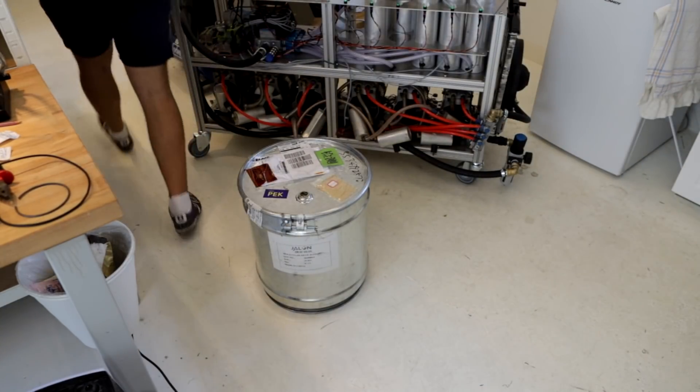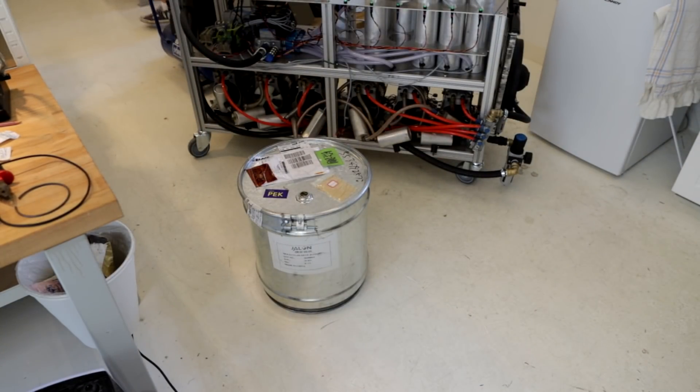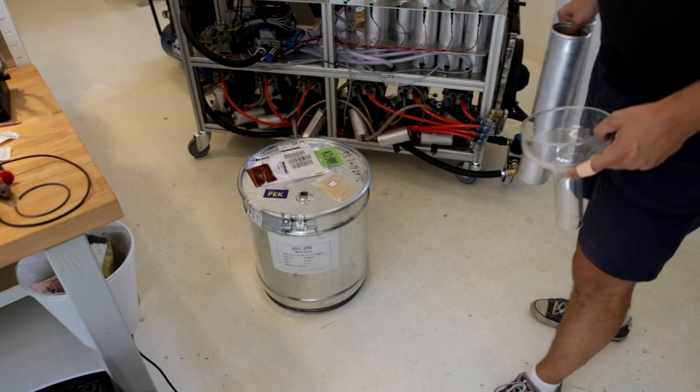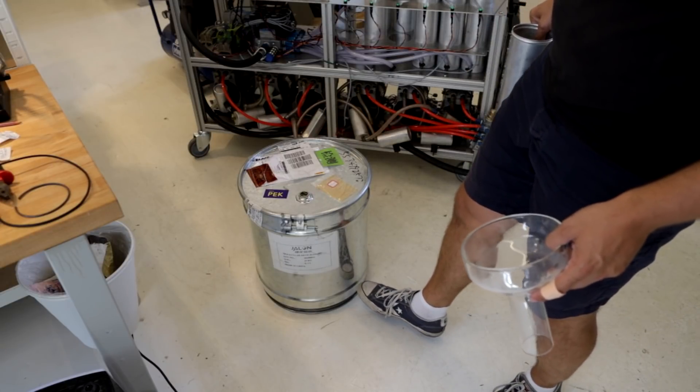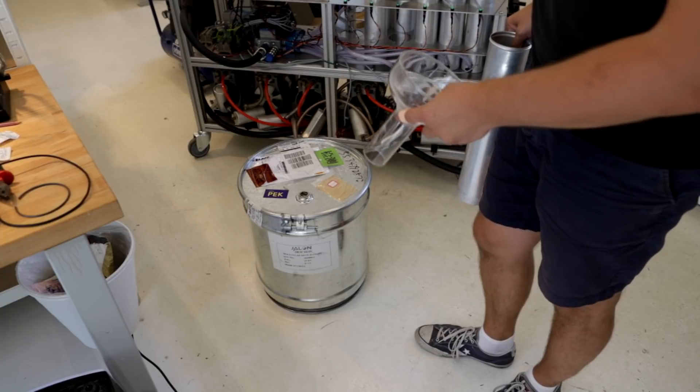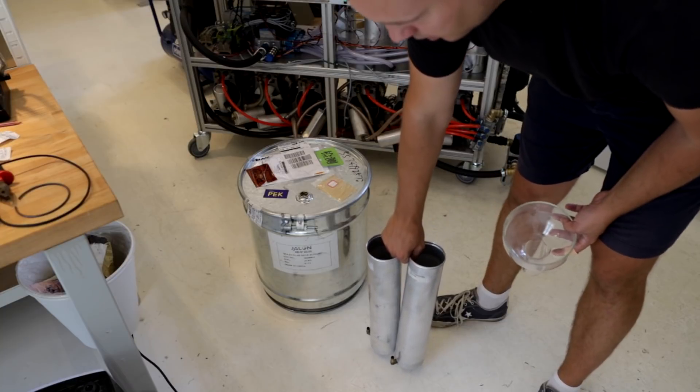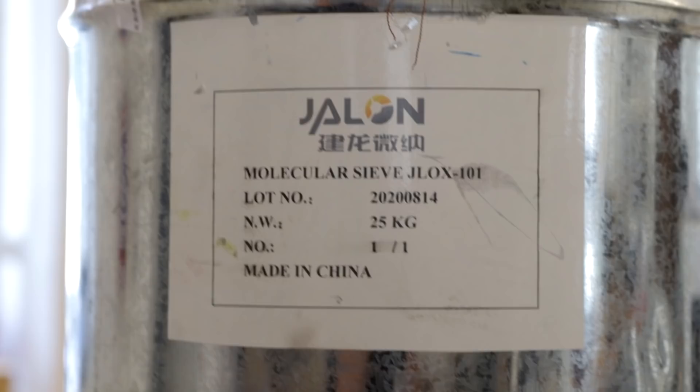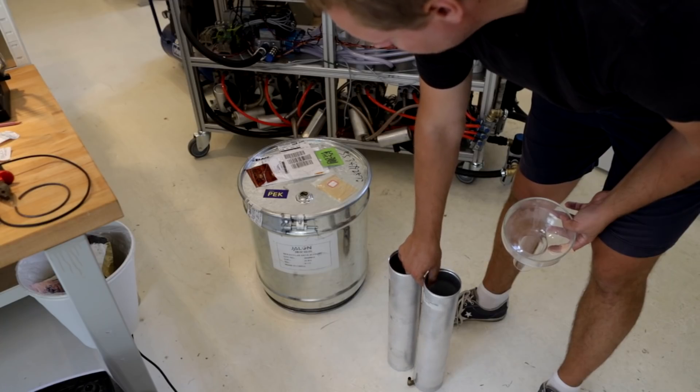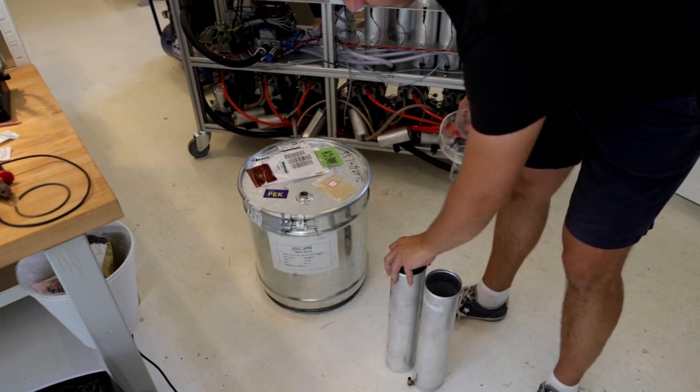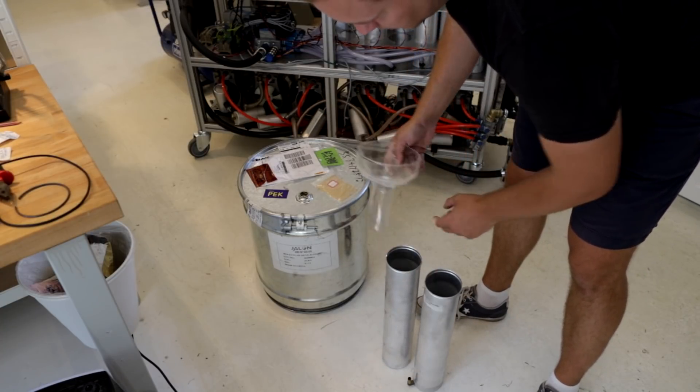So 25 kilograms of fresh zeolite are actually quite expensive. This barrel, 25 kilograms, cost $550, and the shipping, because of the COVID, the shipping rates are higher. It went from China and the shipment was another $400, so quite expensive. This was almost $1,000 US dollars.